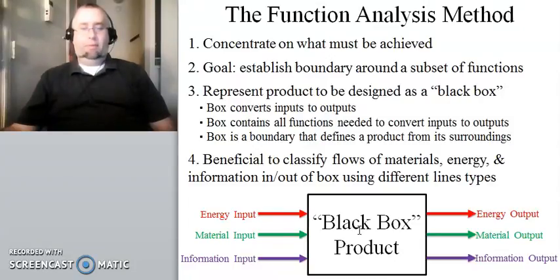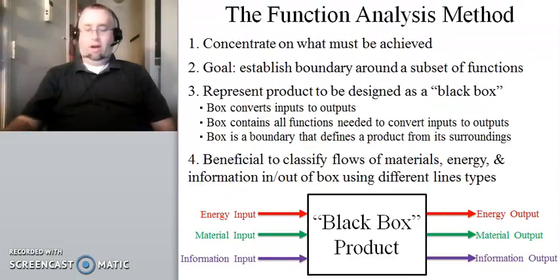So what I show here at the bottom of the slide is a schematic representation of what I'm talking about, how you would represent this. So the black box is literally the box on the screen. And then these are the inputs, so energy in red, material in green, and information in purple. And then the box somehow processes those inputs into outputs. And the outputs can also be information, material, and energy. So that's essentially what this method will look like in the big picture perspective.